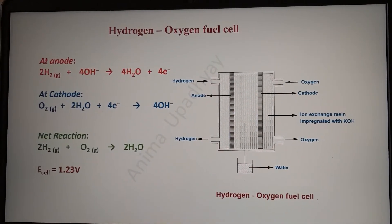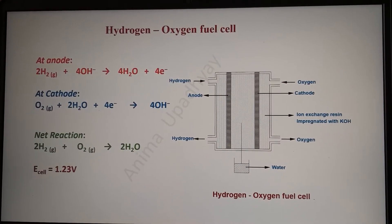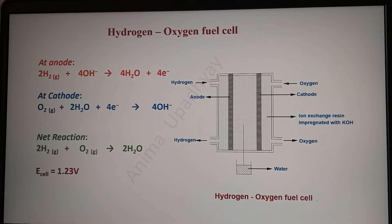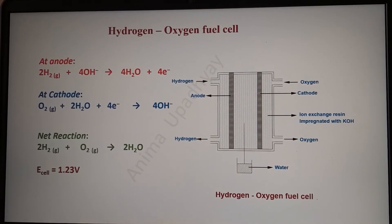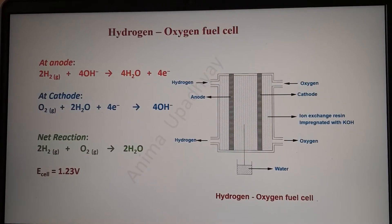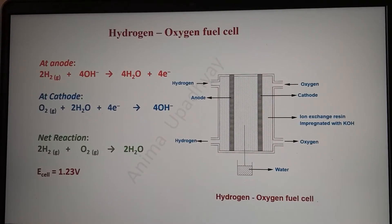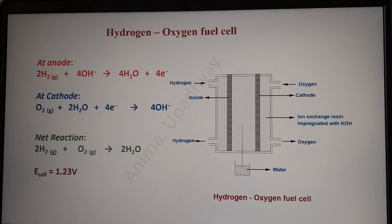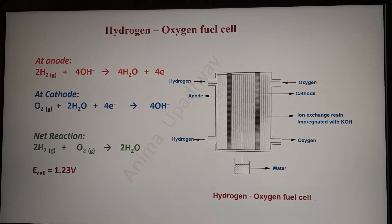The only product here is water. The electrolyte used is potassium hydroxide. In the figure, you can see that hydrogen is supplied at the anode and oxygen is supplied at the cathode. In between the two electrodes is the ion exchange resin, which is impregnated with the electrolyte — that is, potassium hydroxide.